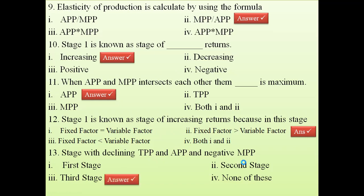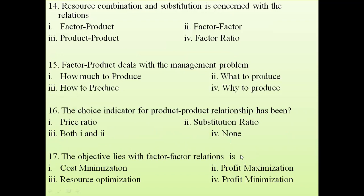Question 14: Resource combination and substitution is concerned with which relationship? Resource means input, so input combination and input substitution — it will be concerned with the factor-factor relationship. Two inputs are combined to produce the same amount of output (isoquant), so this is a factor-factor relationship.